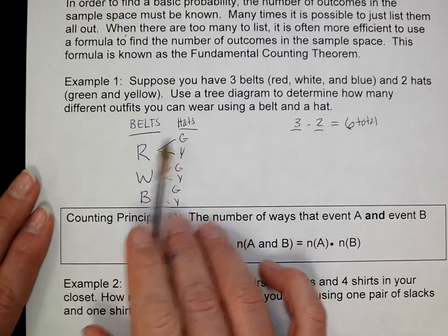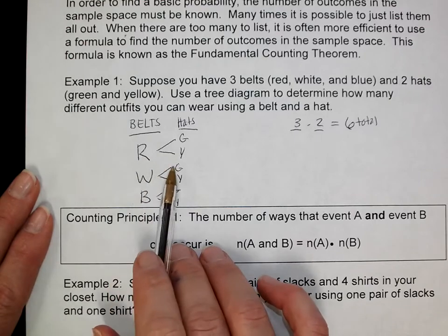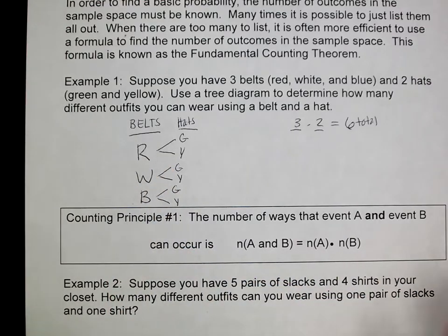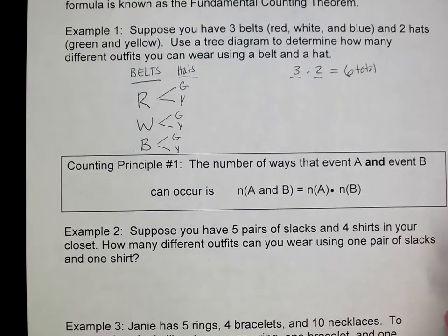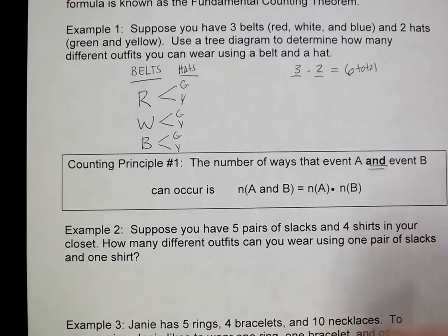Red belt, green hat; red belt, yellow hat; white belt, green hat, whatever. So the first counting principle is when you have events that are 'and' events - the probability of event A and event B. You figure out the probability of A times the probability of B.